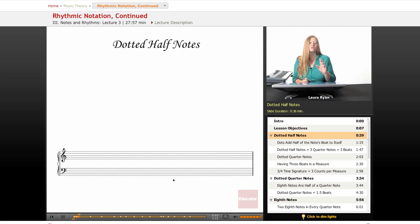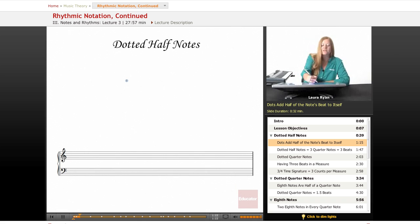First, we're going to go over something called dotted notes. This is something that you will actually see a lot, so it's really important that you understand what it means. We'll start with explaining a dotted half note. So when we have a dotted half note, all it means is that we have a dot next to this note.